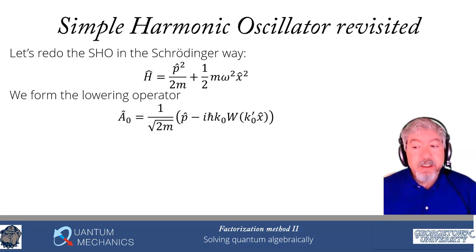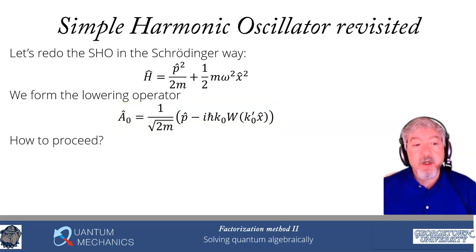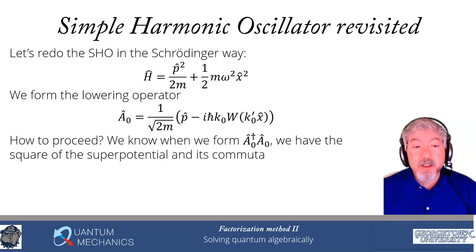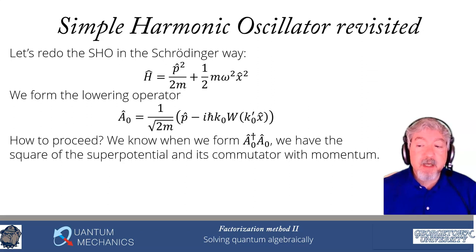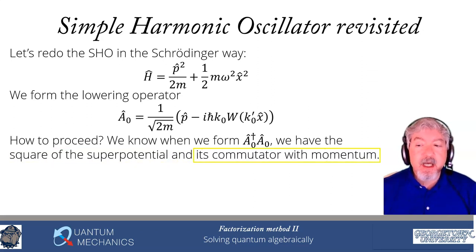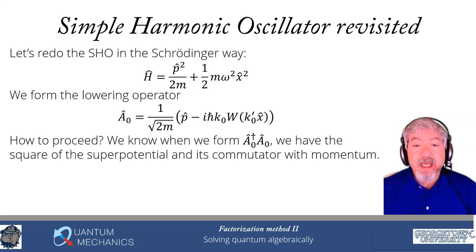The strategy for forming the ladder operator in its generic form is 1/√(2m) times (p̂ − iℏk0 W(k0′ x̂)), where W is the superpotential. The superpotential satisfies a property that's very important in determining how we get the raising and lowering operator. We know we're constructing the Hamiltonian from A0†A0. When we calculate that, we get one term involving the square of the superpotential and one term involving the commutator of the superpotential with momentum. If we want a final potential that is x² and we can add any constant, then picking the superpotential proportional to x is natural.